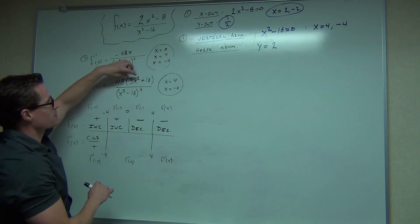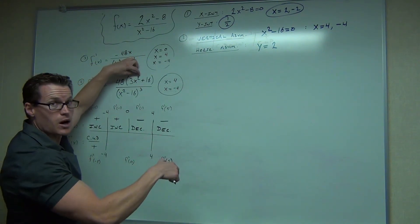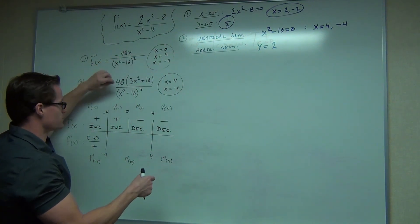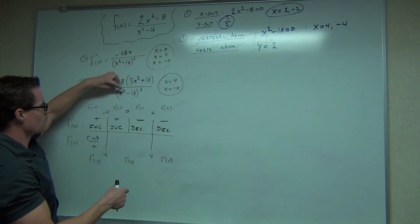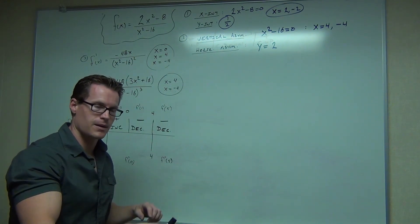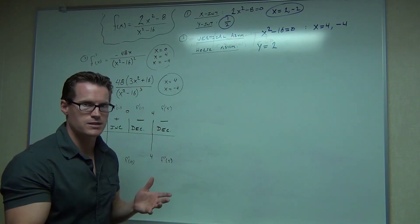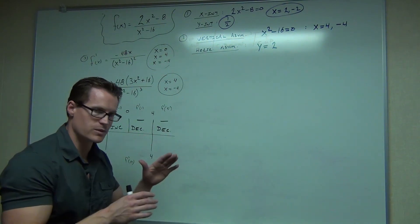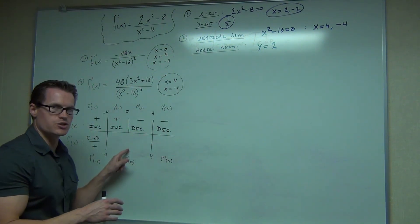Let's check it one more time. Let's check the negative 5. So negative 5 squared, well that's positive, times a 3 is positive, plus 16 is still positive, times 48 is positive. Now let's check it down here. We have negative 5 squared, that's 25, minus 16, well that's still positive, and when you cube it, it'll still be positive. So we're okay on the concave up, it's still going to be concave up.